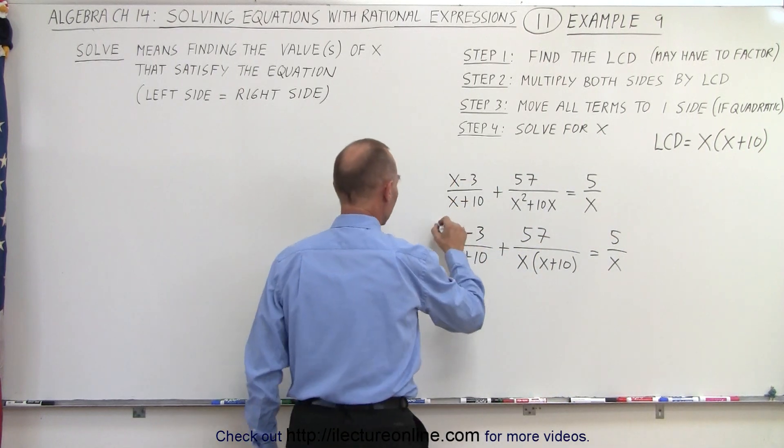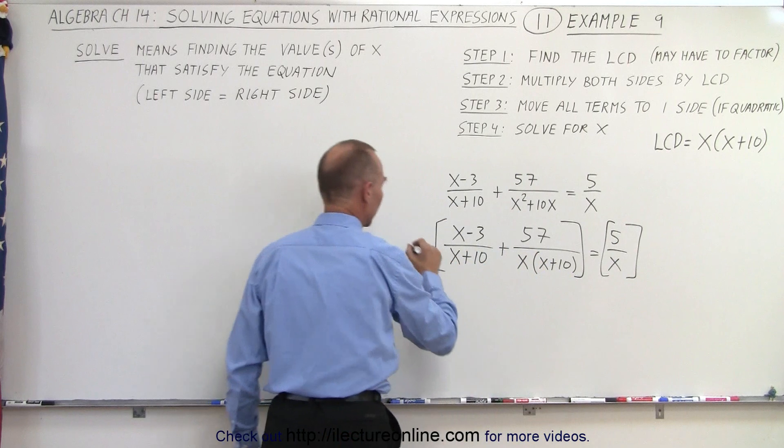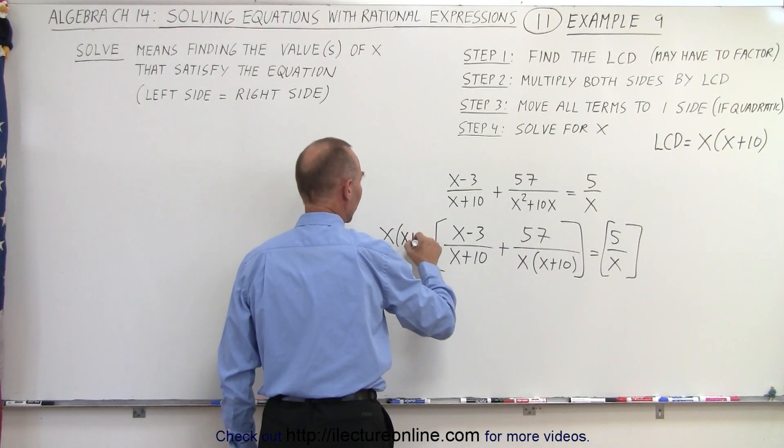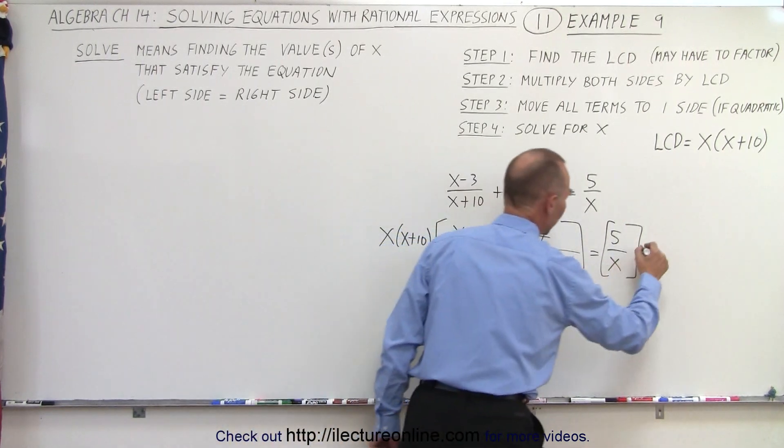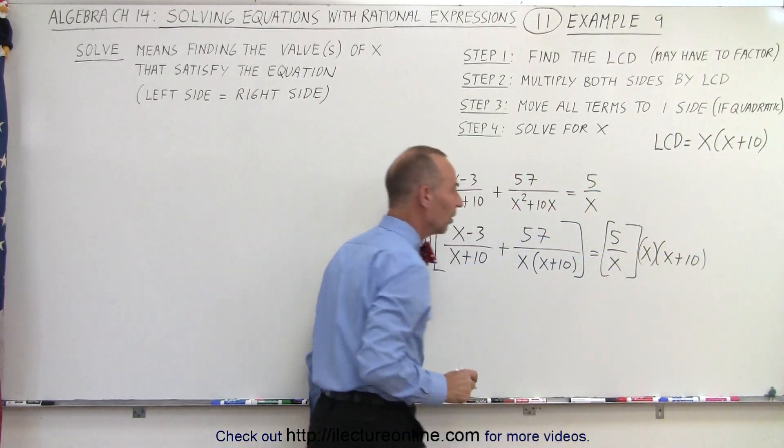Now let's multiply both sides of the equation by the lowest common denominator, x times x plus 10 and x times x plus 10, like so.